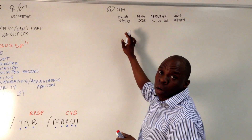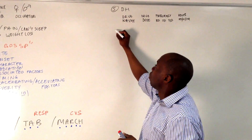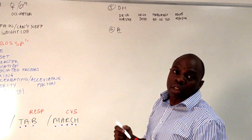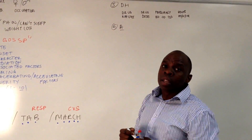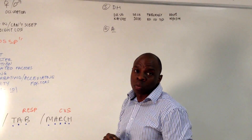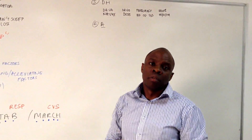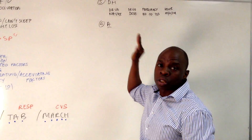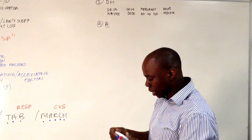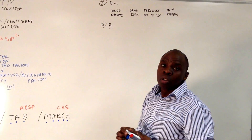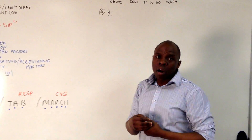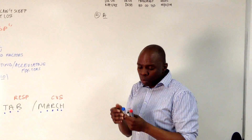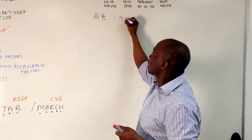The next thing is A, and A gets a separate section of its own — allergies. This is a very, very important one, an absolute must for your OSCE examination because this is a patient safety point, and patient safety scores highly in all medical school examinations. Do you have any allergies? Are there any medications that you're allergic to? Common allergies include things like penicillin.